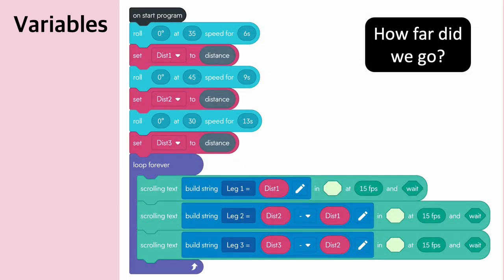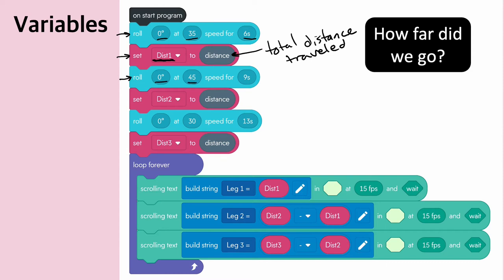Another way you could use variables is to pull out sensor data and hold it for later. In this program, I have the bolt roll at zero degrees at a speed of 35 for six seconds. At that point, I set a variable called 'dist one' — or distance one — to the total distance traveled by the bolt so far. Then in phase two, it continues rolling at a different speed for a different time, and when complete, I set 'dist two' to the total distance.